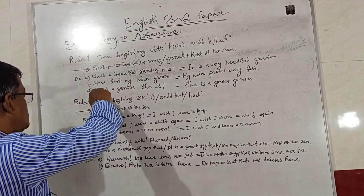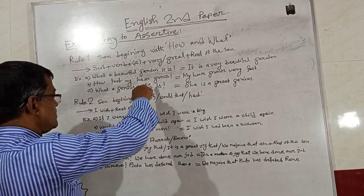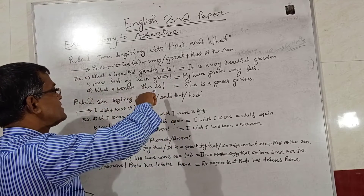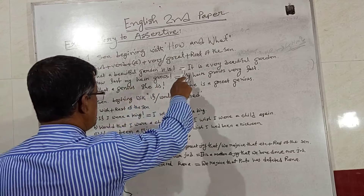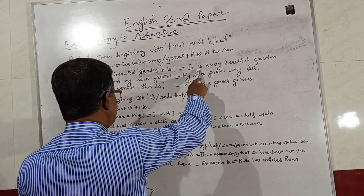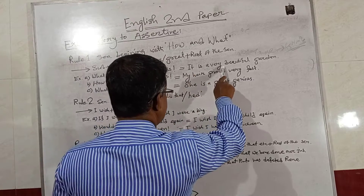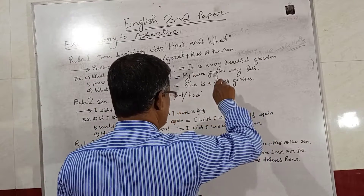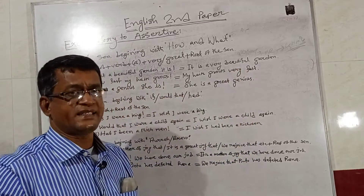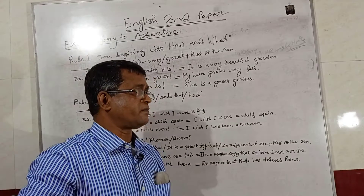Notice the examples. 'What a beautiful garden it is!' — this is an exclamatory sentence beginning with 'what' and ending with an exclamation mark. First, we bring the subject 'it,' then the verb 'is,' then the article 'a,' then 'very,' then the rest: 'a very beautiful garden.' We use 'very' because 'beautiful' is an adjective.